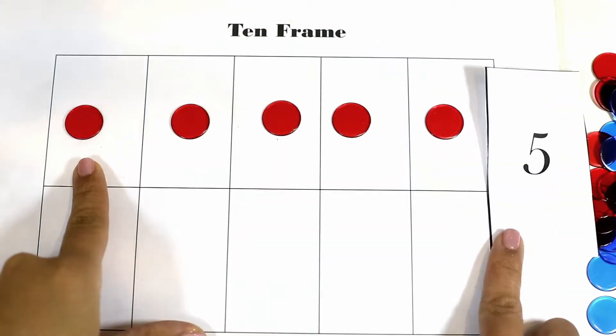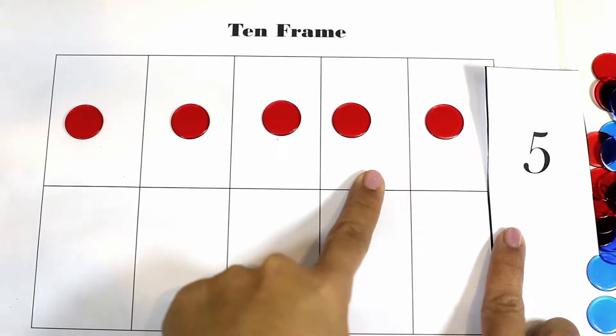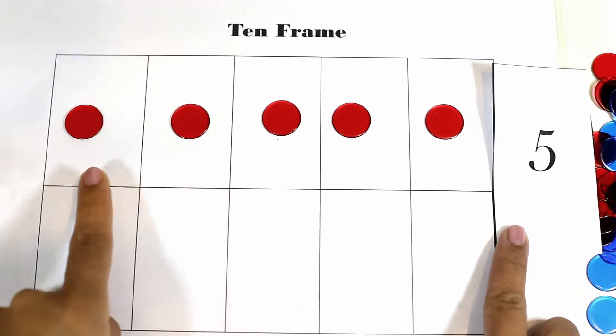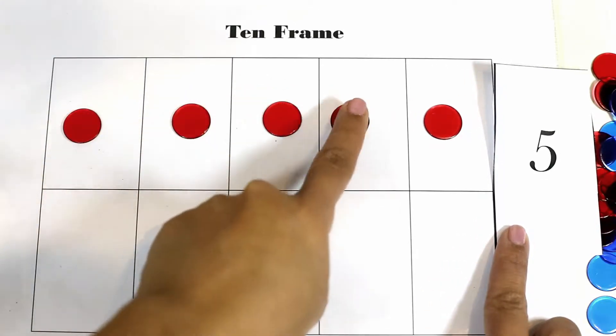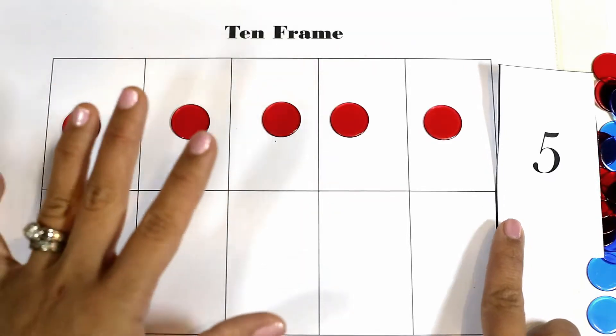They build the number five, they will notice that the top row is all filled. Number five is an important benchmark because since there are five boxes in the top row and if all five of the boxes are filled then the number is five and the learner can understand that they don't need to necessarily count one, two, three, four, five.